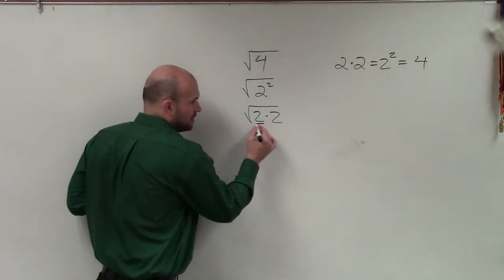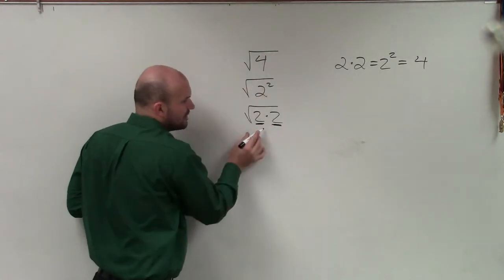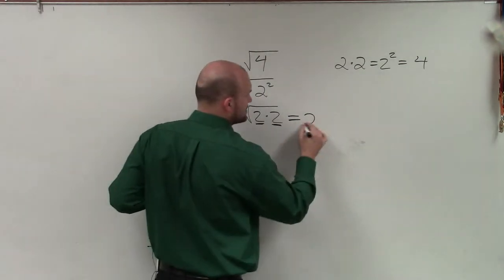you can see the number multiplied by itself that gives us 4 is 2. So the answer to the square root of 4 is 2.